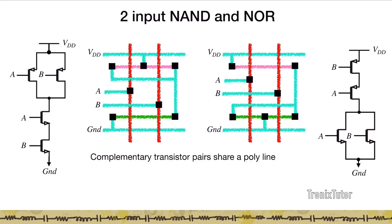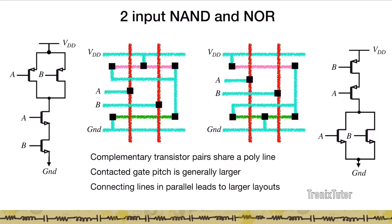When drawing stick diagrams with stacks, a straight line indicates a series connection between two transistors. A couple of rules emerge: complementary transistor pairs typically share the poly line. In older technologies, adding a contact between two poly lines required separating them more, making the design less compact. Without a contact between poly lines, they could be kept closer. Also, connecting lines in parallel leads to larger layouts, so you want more stacks where possible.